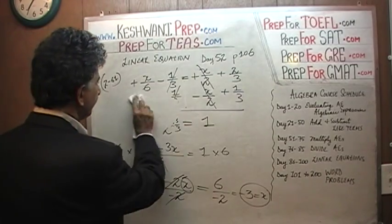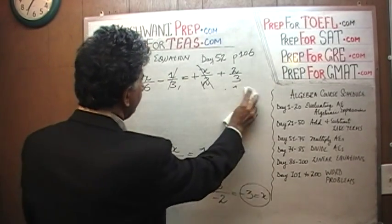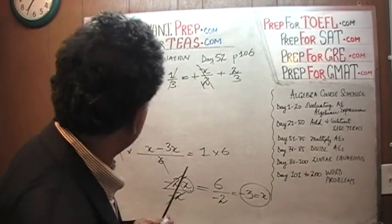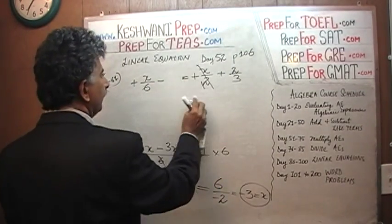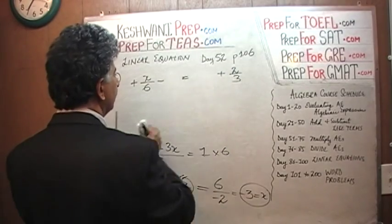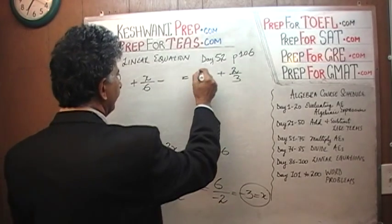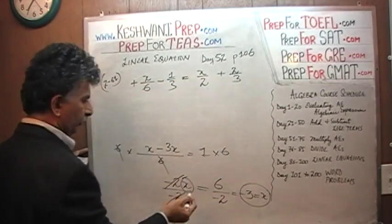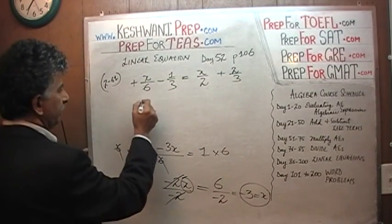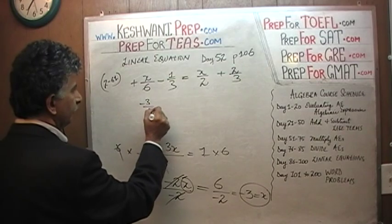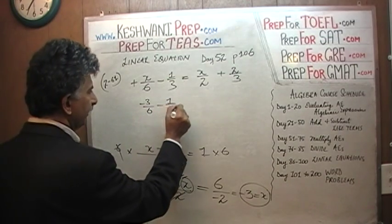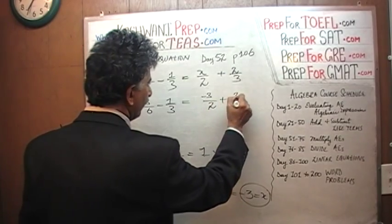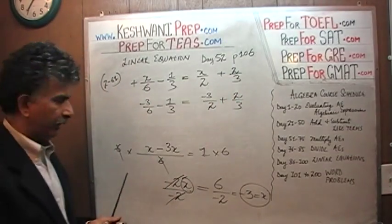Alright, so here we go. This is negative 1 third and this is x over 2. So we see x is equal to negative 3. So put it in here. Negative 3 over 6 minus 1 over 3. And here we have negative 3 over 2 plus 2 over 3. And now the story begins.